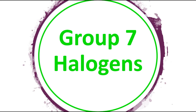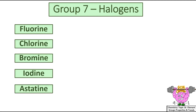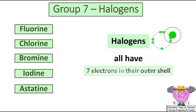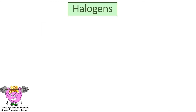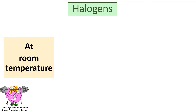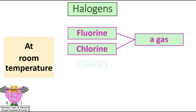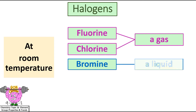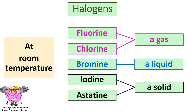Group 7 halogens: fluorine, chlorine, bromine, iodine, astatine. All halogens have 7 electrons in their outer shell. At room temperature: fluorine and chlorine are a gas, bromine is a liquid, while iodine and astatine are a solid.